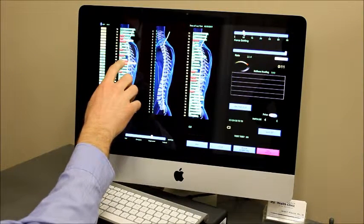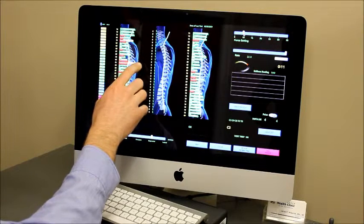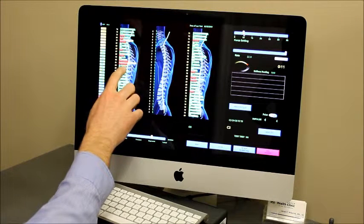The yellow and red bars indicate areas of your spine that are dysfunctional—areas that are moving less than ideally. Those would be the areas that we would adjust.